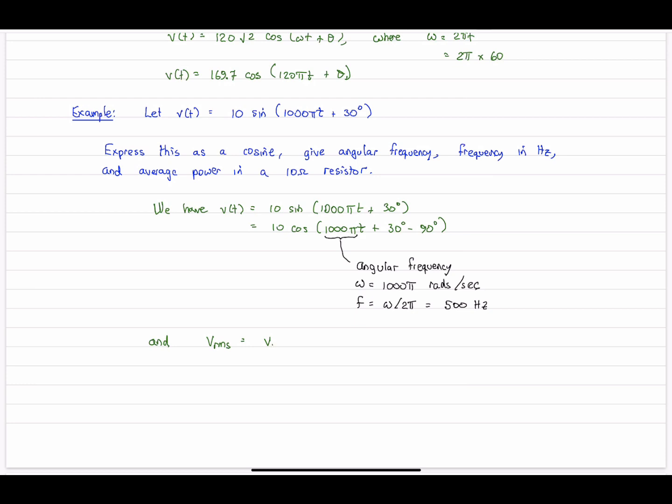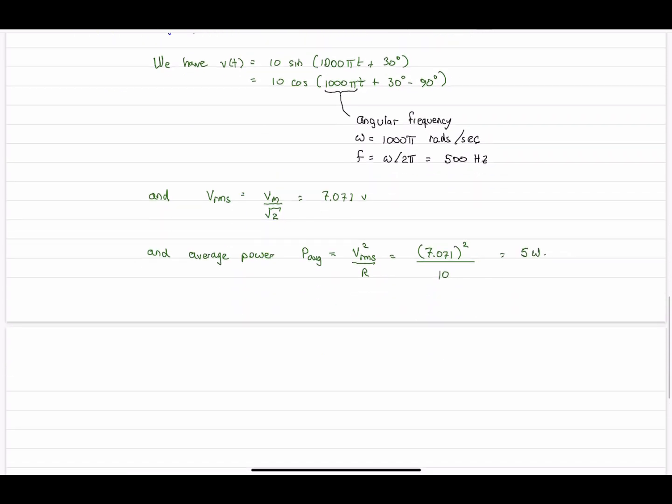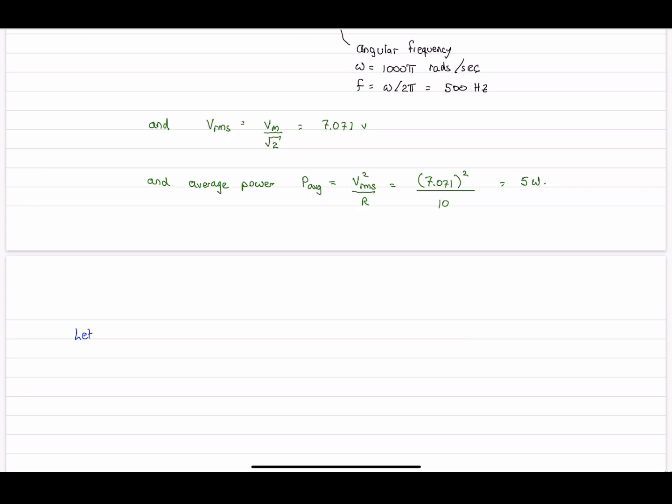And so the RMS voltage now is, once again, just simply the peak value, 10, 10 volts divided by √2. So 7.071 RMS volts. And the average power. And so this is the RMS voltage squared divided by R. And so this works out to simply 5 watts. 5 watts of average power.